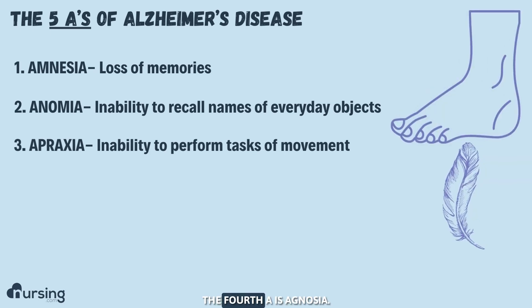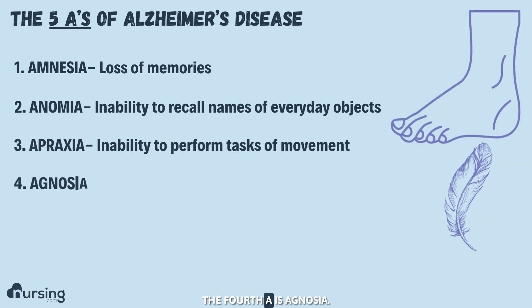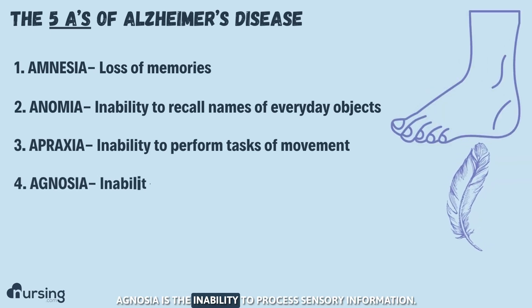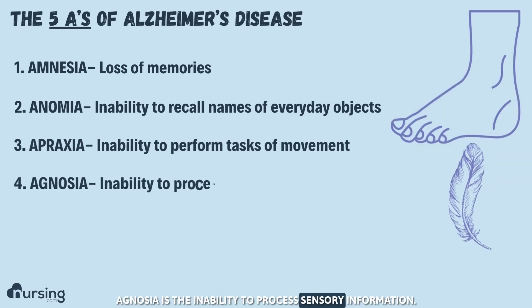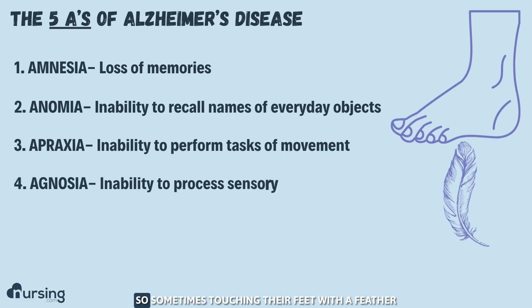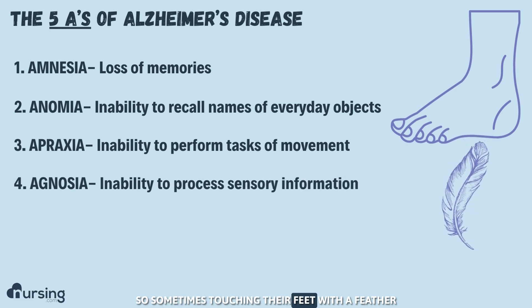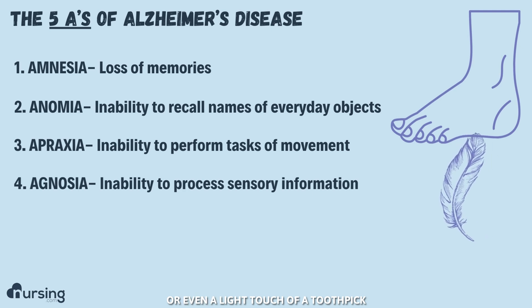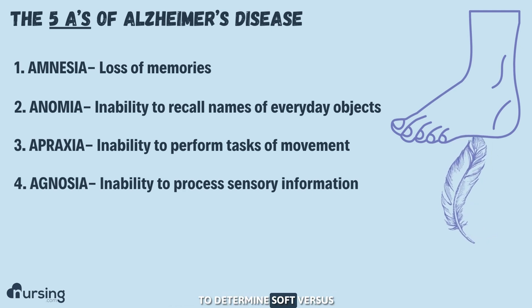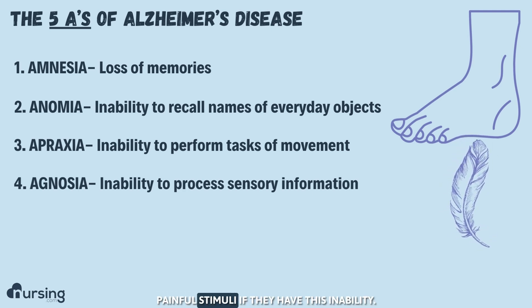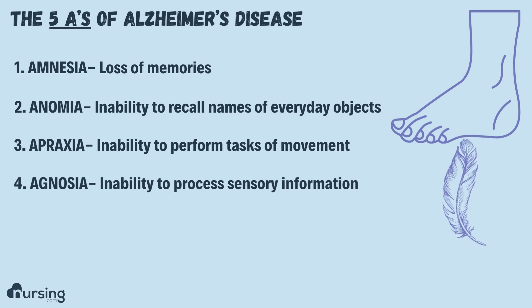The fourth A is agnosia. Agnosia is the inability to process sensory information. So sometimes touching their feet with a feather or even a light touch of a toothpick to determine soft versus painful stimuli — if they have this inability,